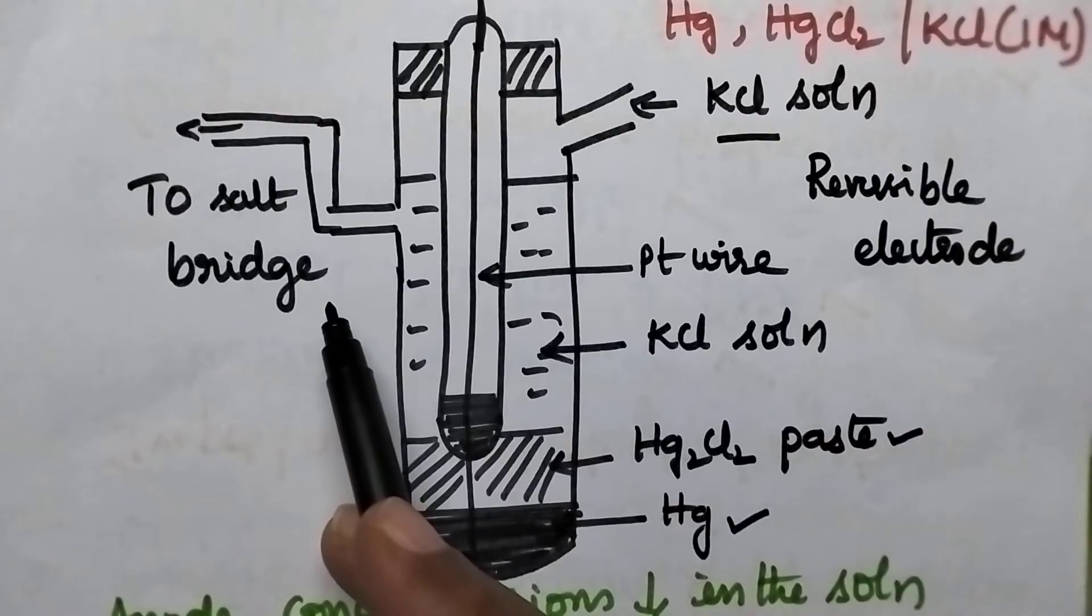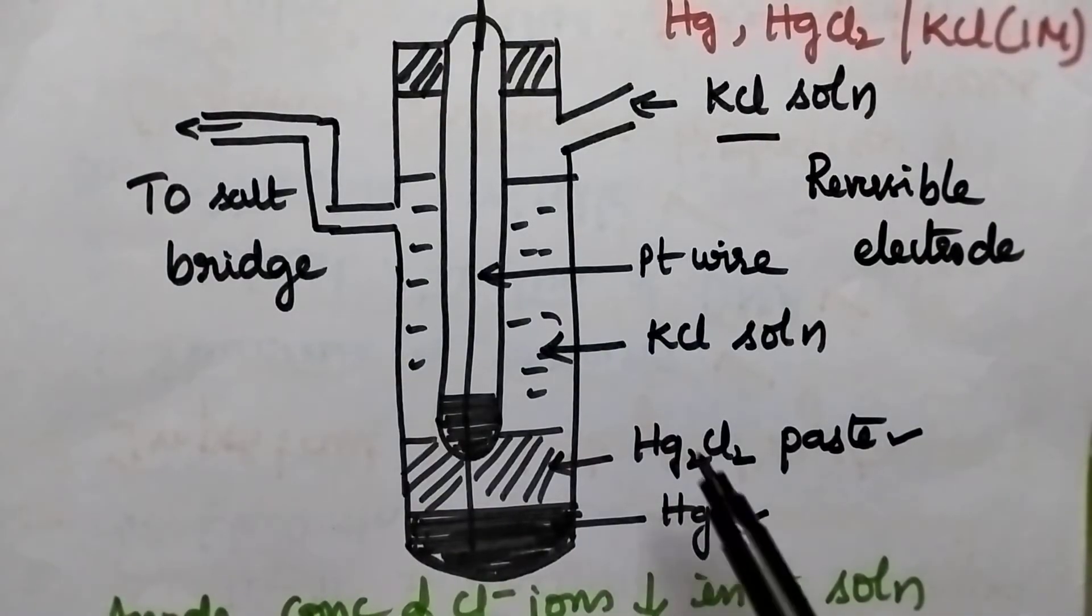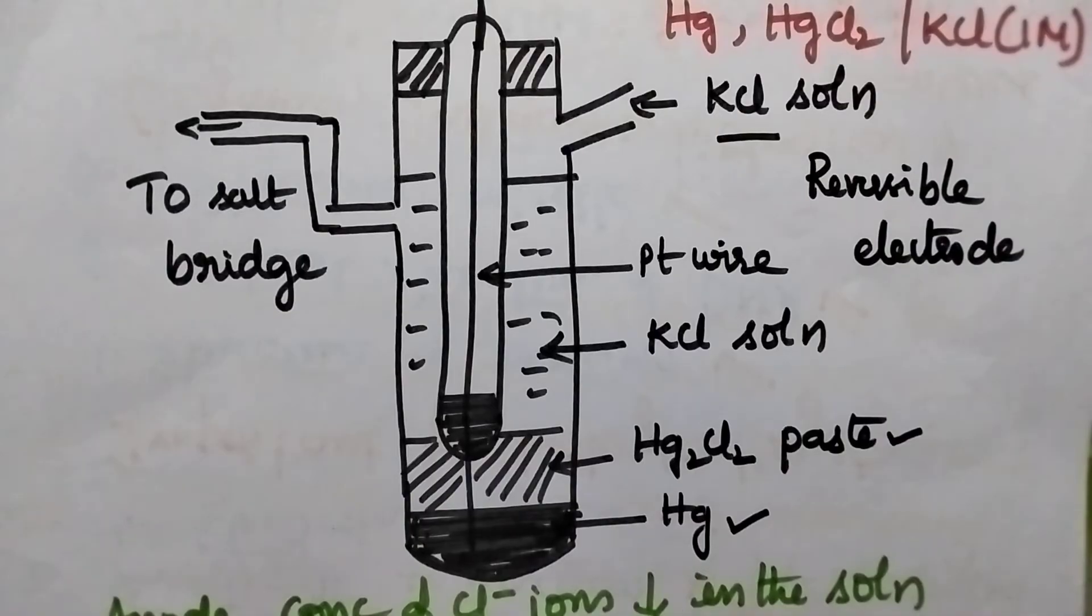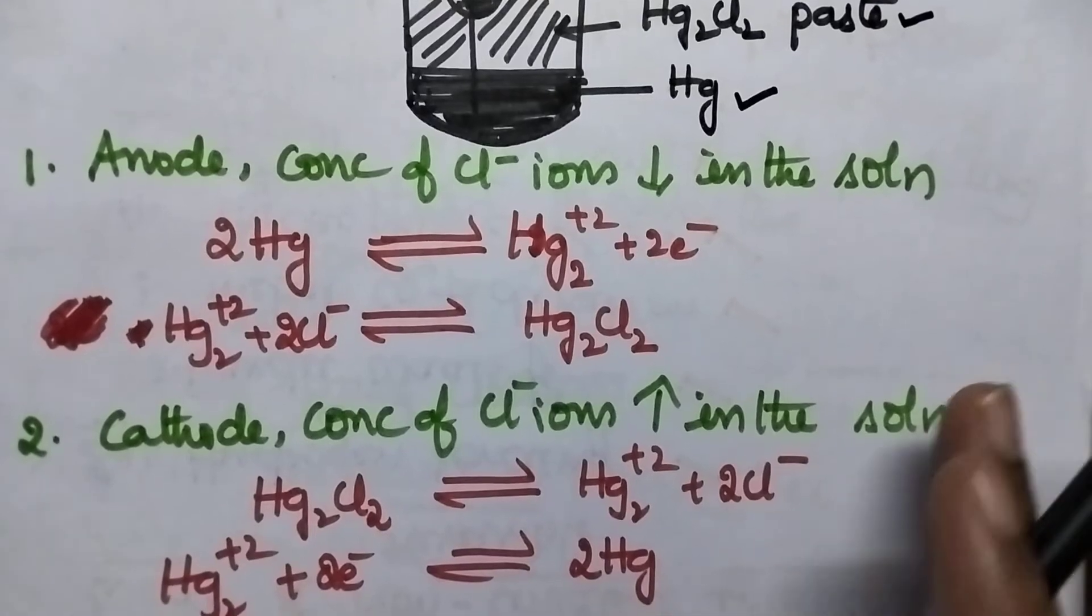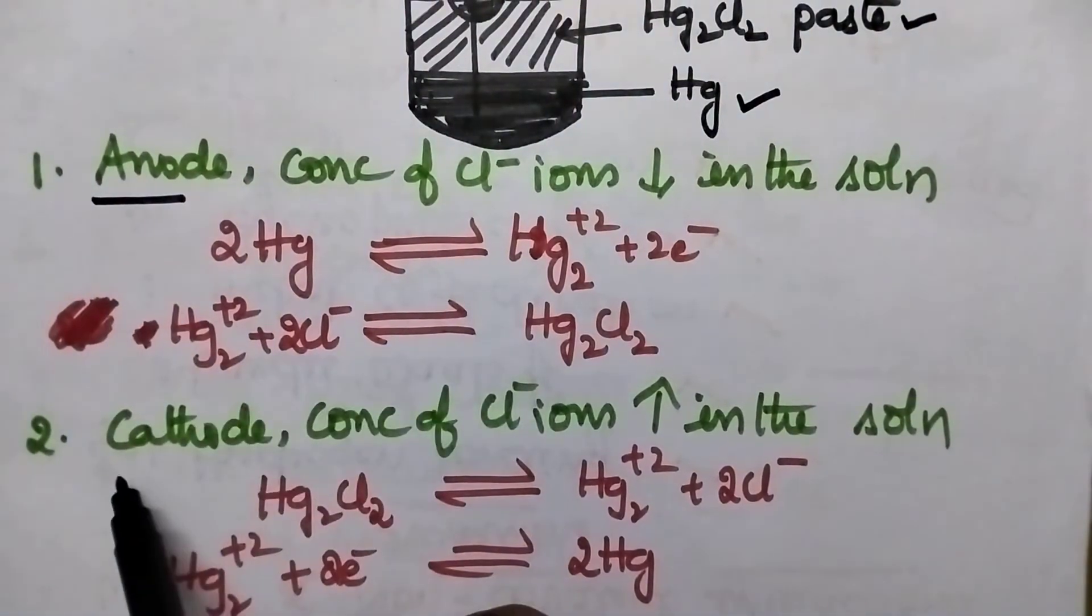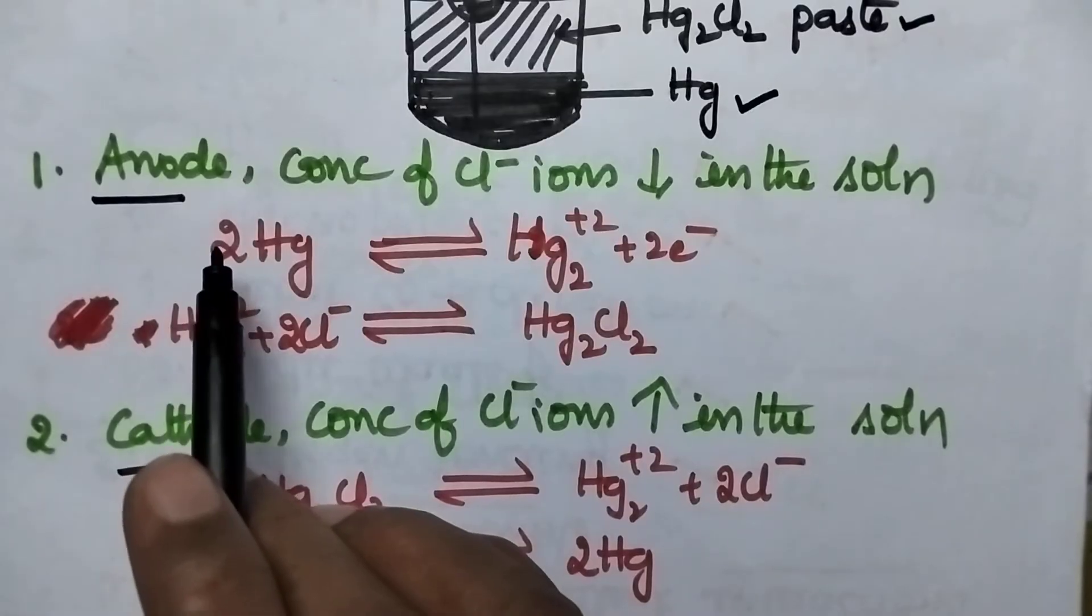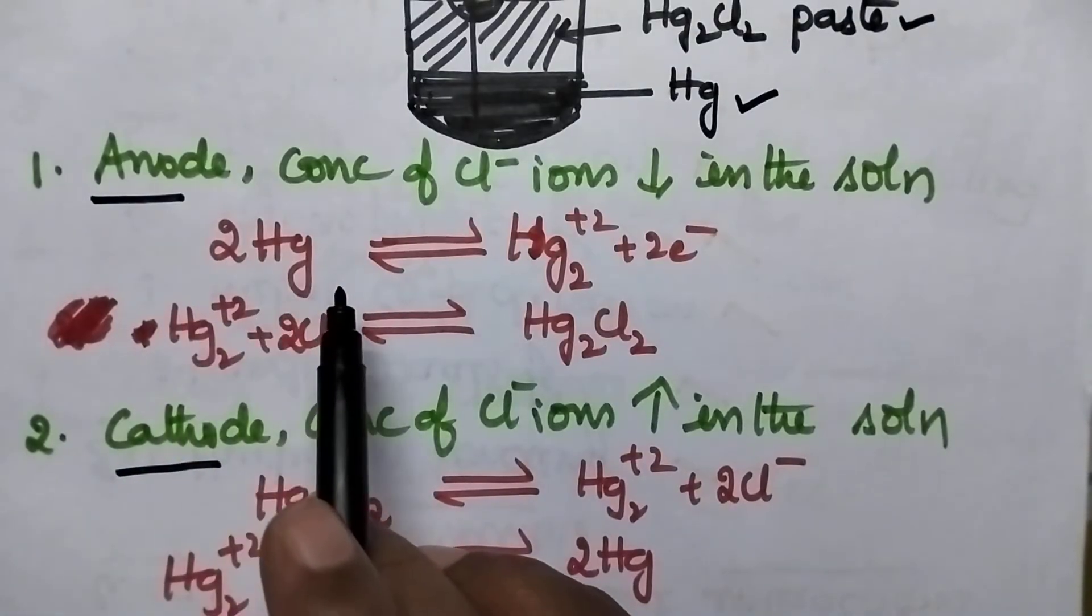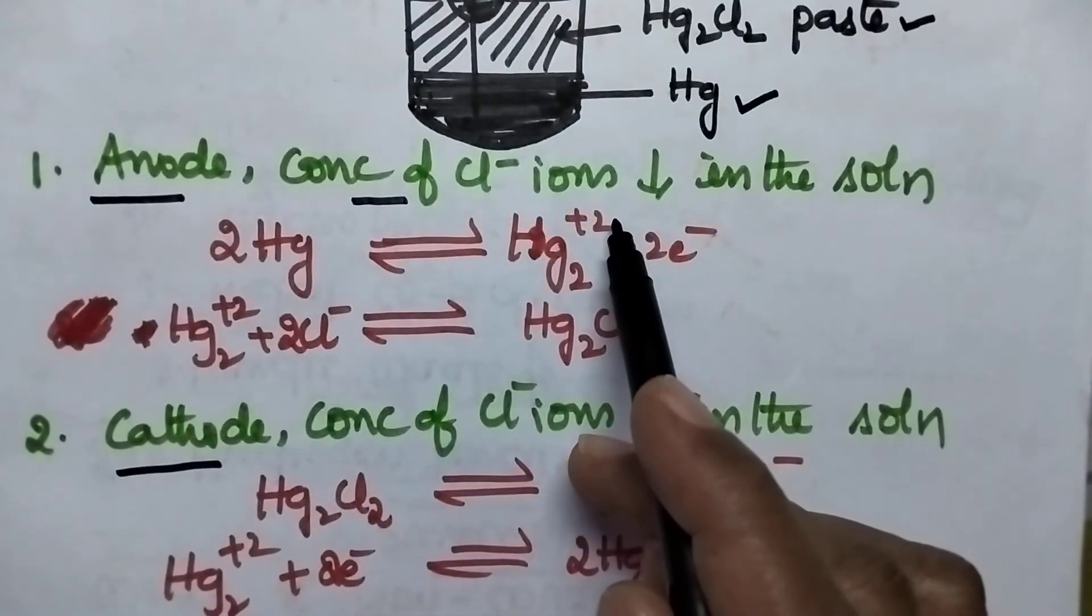And from the other side, it can be connected to the salt bridge to complete the electrochemical cell. So whenever the connections are completed, depending upon the other electrode connected, this calomel electrode can act as either anode or it can also act as the cathode. If this calomel electrode acts as the anode, always oxidation takes place.